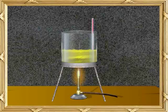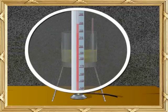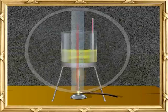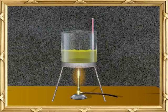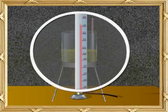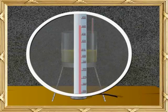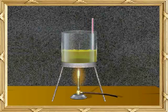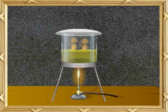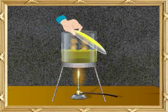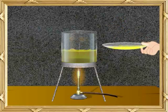Heat a portion of the thick viscous liquid sulphur again. When the temperature goes above 230 degrees Celsius, it becomes mobile again and the colour becomes brown. Heat the test tube again and note the temperature — it is 444 degrees Celsius. The liquid is boiling. Can you see the light orange vapours? Try holding a cold plate over the vapours. The vapours condense on the plate to form yellow sulphur powder.